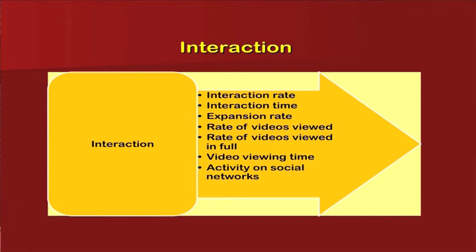Interaction is judged by the interaction rate, interaction time, expansion rate, the rate of videos being viewed, rate of videos viewed in full, video viewing time, and activity on social networks. How you are interacting with customers can be judged by these recorded parameters — how your videos have gone viral, how many people are sharing or viewing them, or if abandoning them, and whether videos are viewed to their full extent. This constant connection with customers estimates where the customer is spending time and what activity they are involved in.